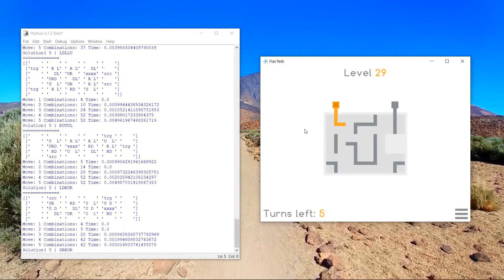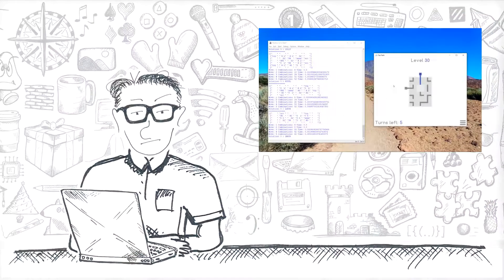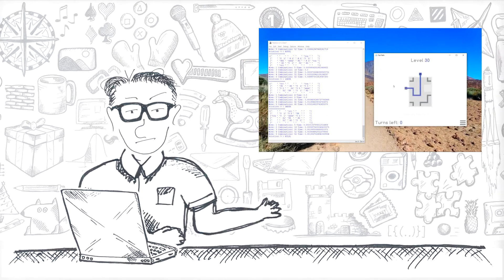I have written a program to solve puzzles in the game Flat Path, which is a cross between a pipe puzzle and a 15 puzzle. Let's see how it went.